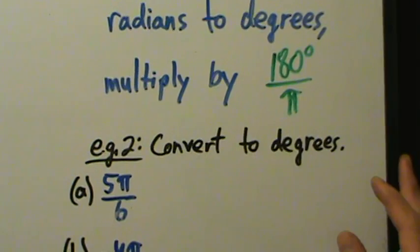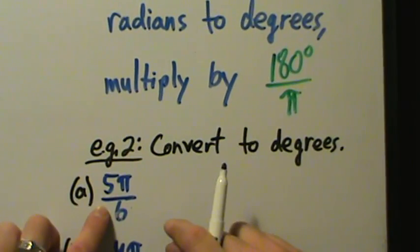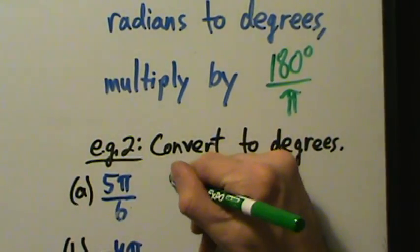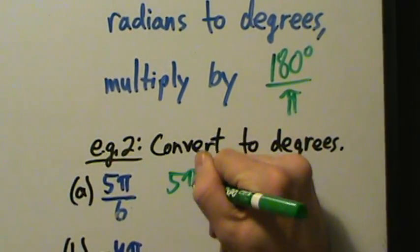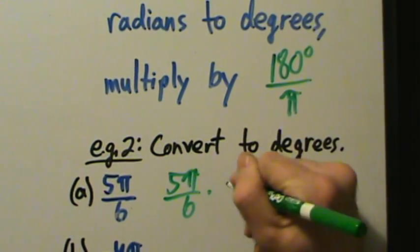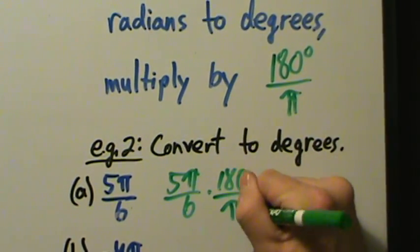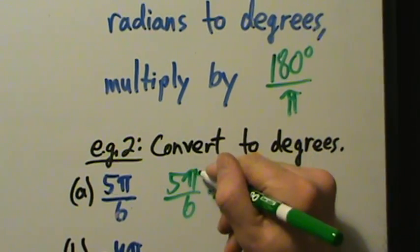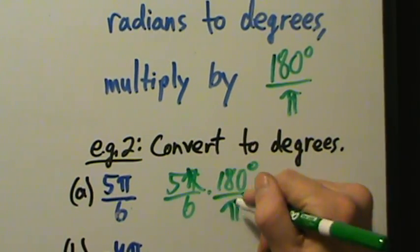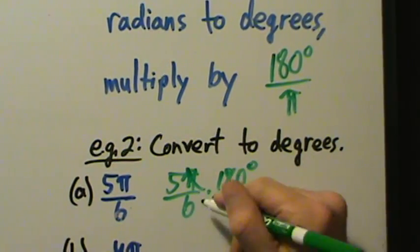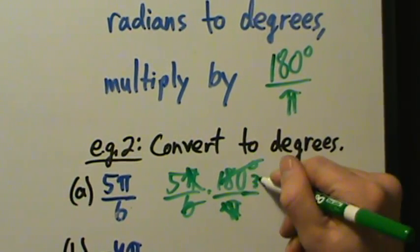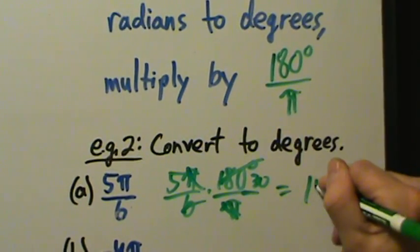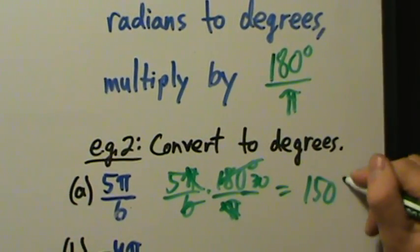Convert these to degrees. For 5 pi over 6, multiply by 180 degrees over pi — the pi's cancel. 6 goes into 180 thirty times, and 30 times 5 is 150, so this is 150 degrees.